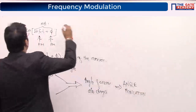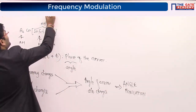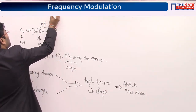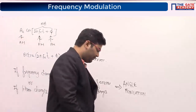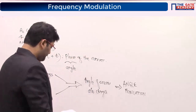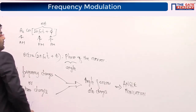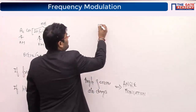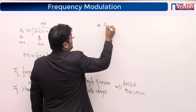In angle modulation, we're going to see frequency modulation first. FM is defined as the process in which the frequency of the carrier is varied according to the message signal.